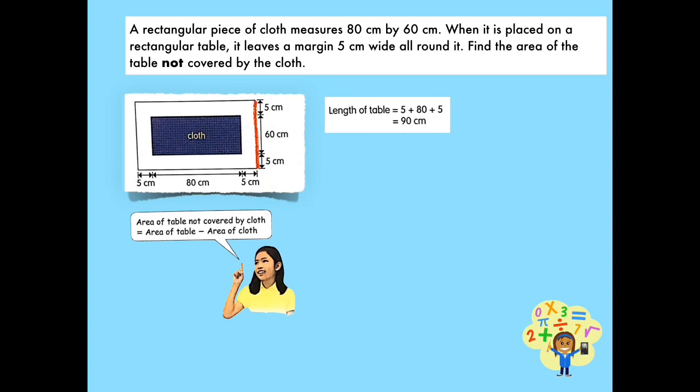To get the breadth of the rectangular table, we add 5 cm plus 60 cm and 5 cm, which gives us a total of 70 cm. To get the area of the rectangular table, we multiply the length and the breadth, which is 90 times 70. 90 times 70 will give us 6,300 square centimeters. Remember that in finding the area, the unit of measure should be square centimeters.